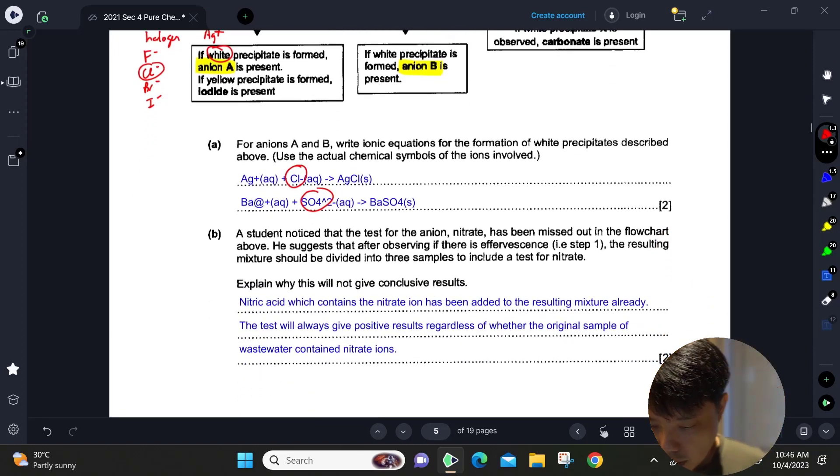A student noticed that the test for anion nitrate has been missed out. He suggests that after observing if there's effervescence, the mixture should be divided into three samples to test for nitrate. This will not be very logical.